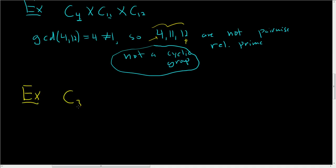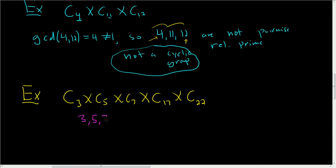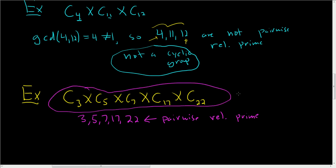How about the cyclic group of order 3, direct product with C sub 5, C sub 7, C sub 17, and C sub 22? The orders are 3, 5, 7, 17, and 22. If you take the GCD of any two of these, you should get 1 — these are pairwise relatively prime. So this group is cyclic. I hope this helps.